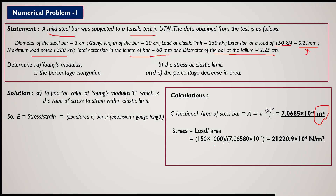Stress at 150 kN: multiplying 150 × 10³ N by the cross-sectional area gives stress ≈ 2.122 × 10⁴ N/m². Strain = extension / gauge length = 0.21 mm / 200 mm (since 20 cm = 200 mm), giving strain ≈ 0.00105. Strain has no units.